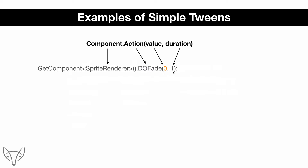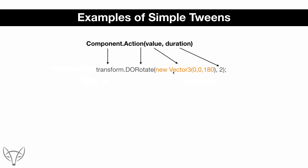That animation will move the game object in the X direction. Another example: the component is sprite renderer, the action is DoFade, the value is 0, and the duration is 1 second — which fades out the game object in 1 second. A third example: the component is transform, the action is DoRotate, the value is (0, 0, 180), and the duration is 2 seconds, rotating the game object 180 degrees around the Z axis.